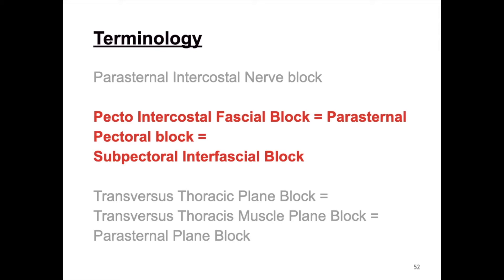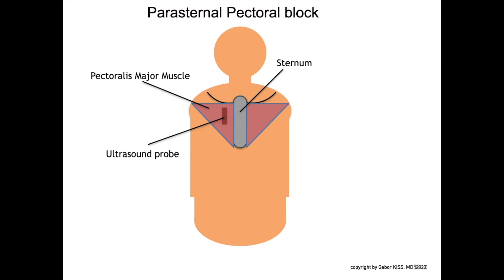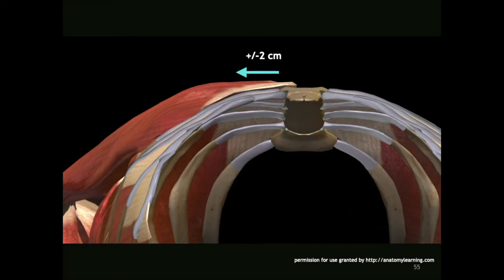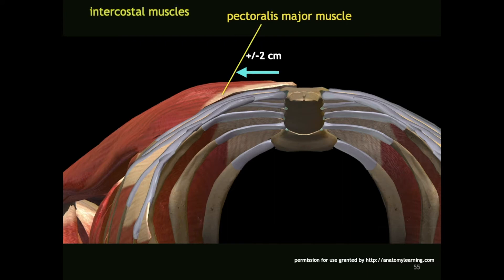Literature also describes the pecto-intercostal fascial block, also called parasternal pectoral block. In some papers, this block is also named subpectoral interfascial block. The parasternal pectoral block was first described in 2014 by De La Torre and co-workers as the ultrasound-guided pecto-intercostal fascial block. Injection takes place 2 cm lateral to the sternum, between the pectoralis major muscle and the intercostal muscle.